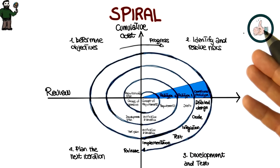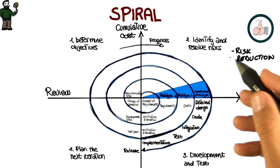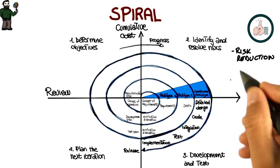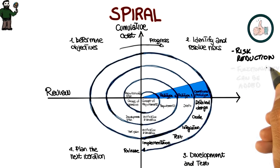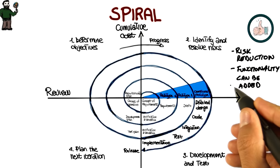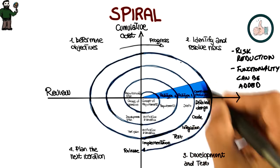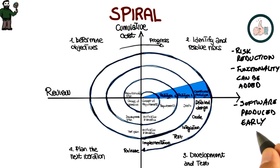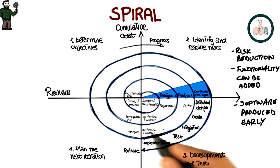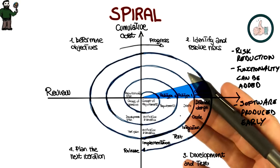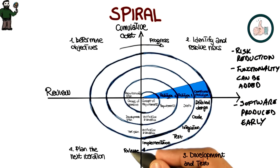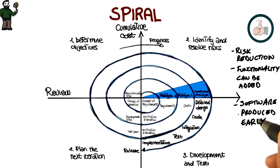There are several advantages of using a spiral model. The first one is that the extensive risk analysis reduces the chances of the project failing — so there is a risk reduction advantage. The second advantage is that functionality can be added at a later phase because of the iterative nature of the process. Finally, software is produced early in the software lifecycle, so at any iteration we have something to show for our development. We don't wait until the end before producing something, and that also allows us to get early feedback from the customer about what we produce.